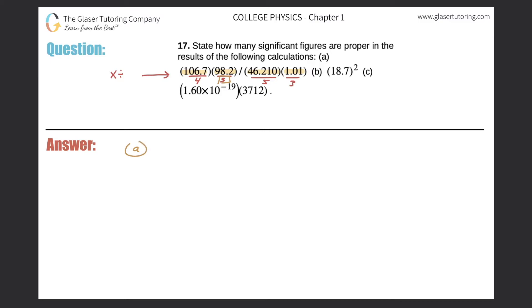So that means for part A, the significant figures or sig figs in the answer must equal three. Easy enough. Let's take a look at letter B. Actually, I'll change the color.